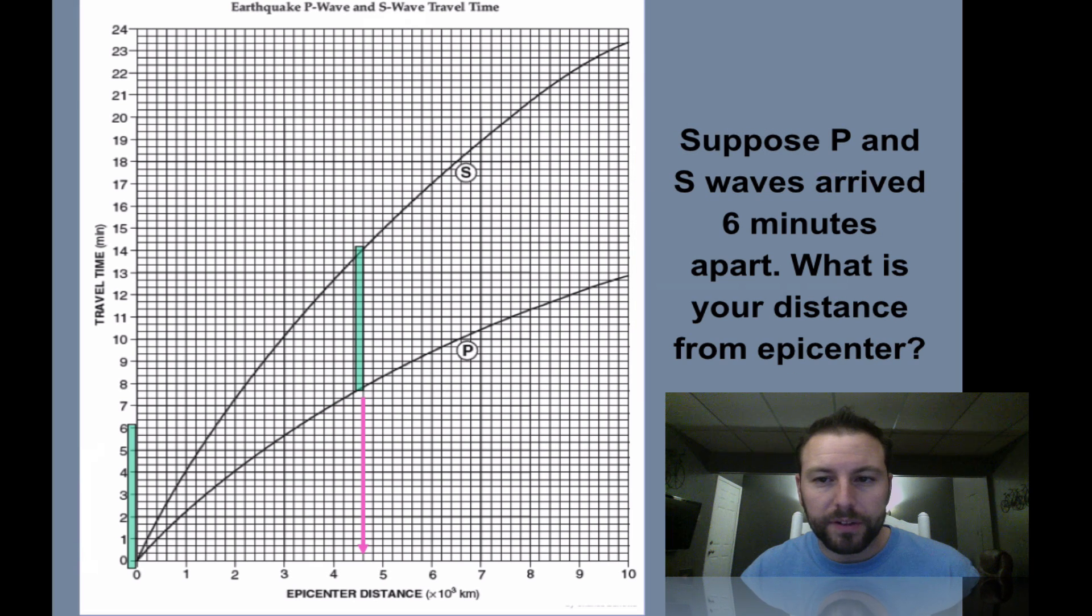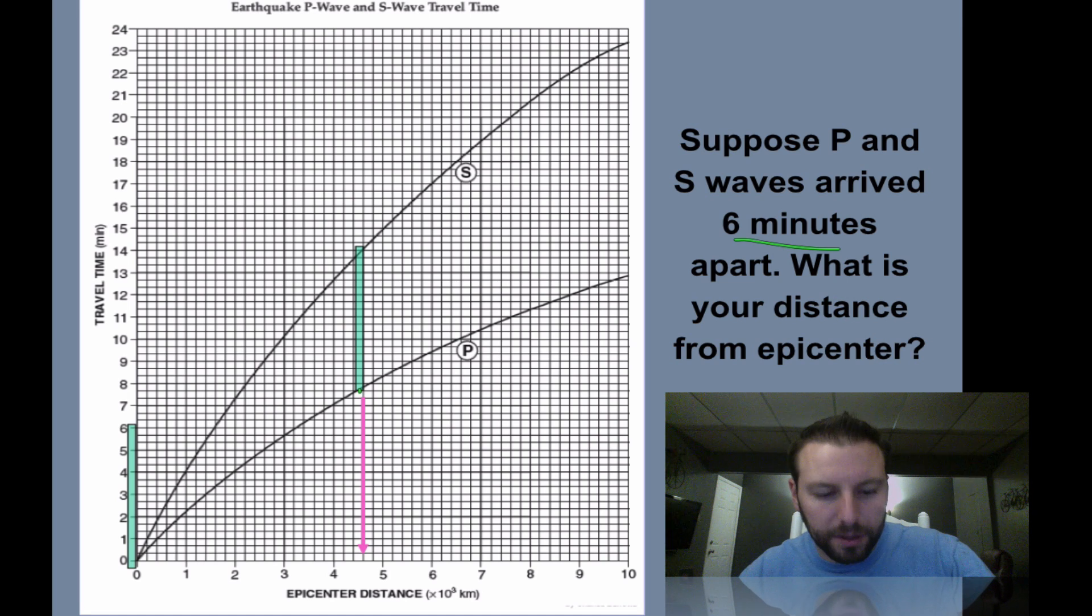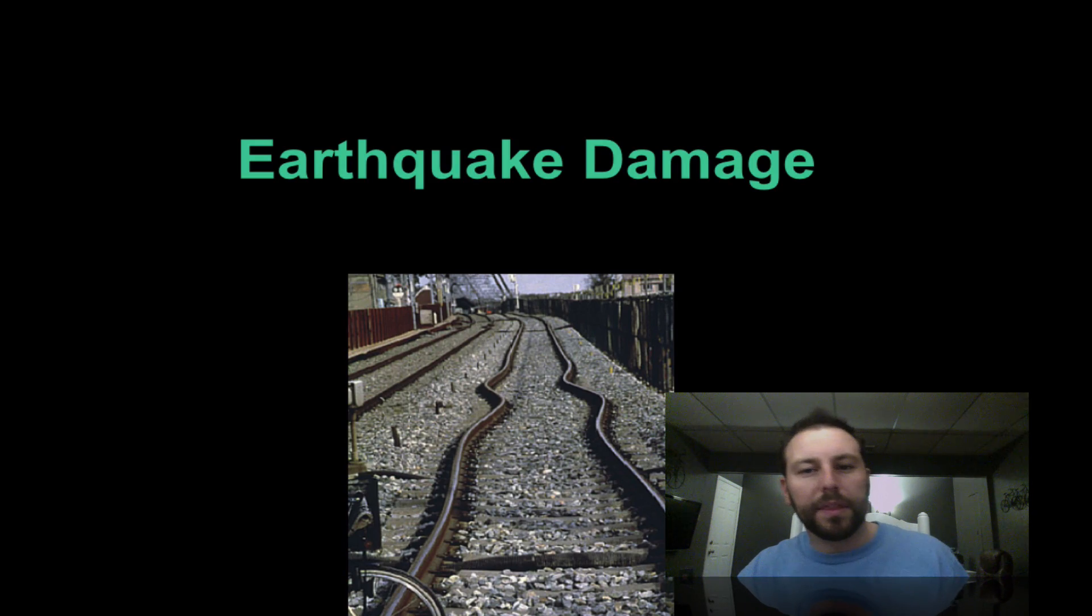Now, a little bit different. Suppose we are six minutes away. So we do the same thing we did before. They gave us the difference. We mark it on our paper. We transpose it to where it hits both lines, draw the line down, and here we get 4,600 kilometers. I would try doing this on your own to make sure that you can also get it. That is the basics of page 11. We're going to go a little bit more in-depth with it, but that's it.